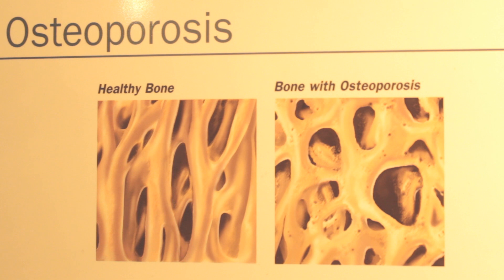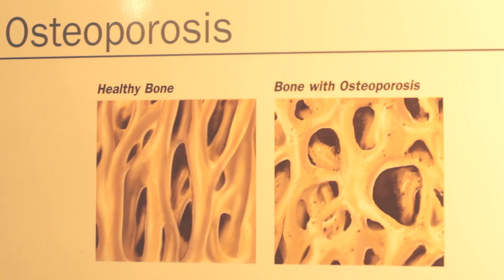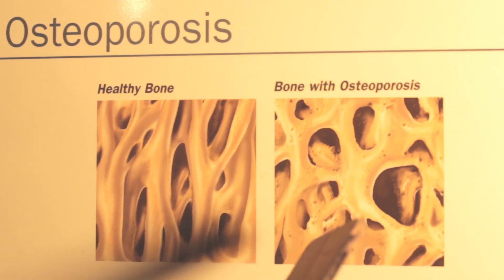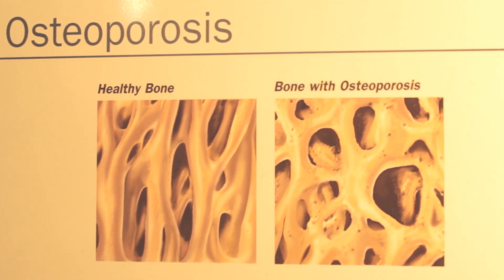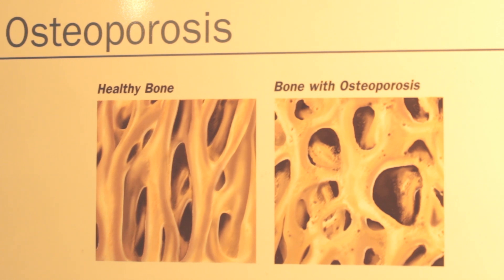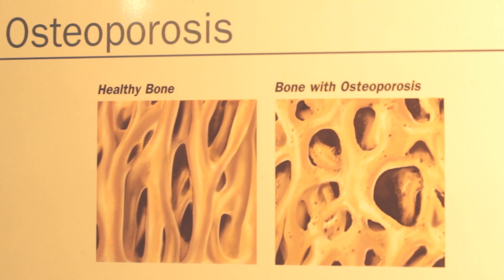First we're going to talk about osteoporosis. Osteo meaning bone, porosis meaning thinning or loss of density, and osis meaning condition. So what we have here is a condition where the bones are losing density, basically becoming brittle. Now if the bones are brittle, that means the bones are not getting oxygen to feed the calcium cell. That's the root of osteoporosis — lack of oxygen.